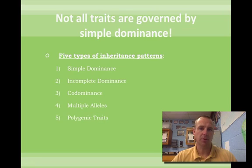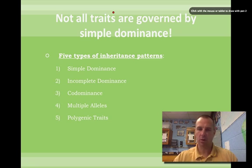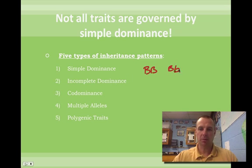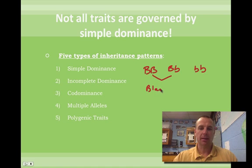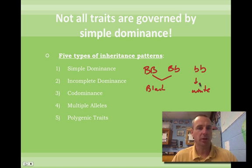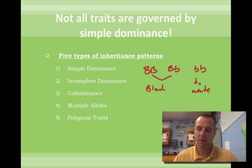There are basically five types of inheritance patterns. The first one, simple dominance, is one we've spoken about before. You've got BB, Bb, and bb. If big B is dominant and it codes for black, then BB and Bb would be black, and bb would be white. Now, we know that every trait in the world is not governed by simple dominance, because if that were true, we'd only have two hair colors, two eye colors, two skin colors — so we know that's not true.